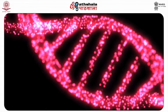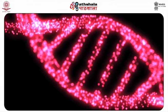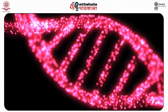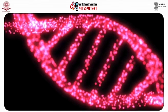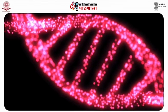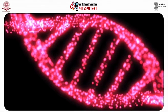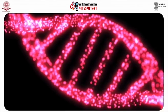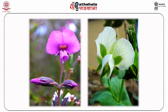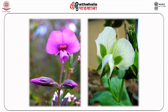Mendel found that there are alternative forms of factors, now called genes, that account for variations in hereditary characteristics. For example, the gene for flower color in pea plants exists in two forms — one for purple and the other for white. These alternative forms are now called alleles.